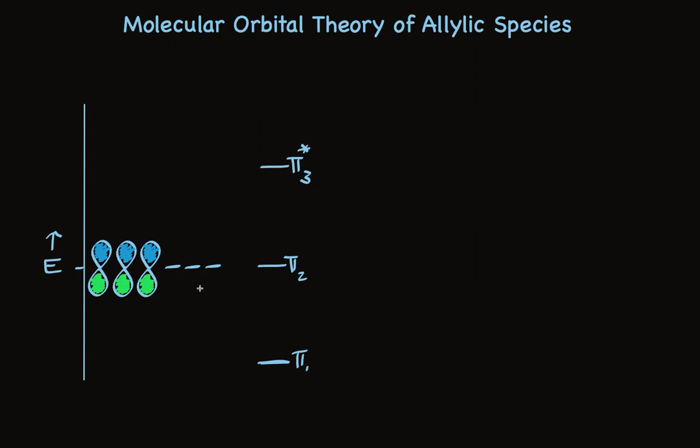One of these is lower energy and the other is higher energy. The other one, pi-2, is a non-bonding orbital that has the same energy as the p-orbitals. The more stable MO, pi-1, is a bonding orbital; pi-2 is a non-bonding orbital; and pi-3 is an anti-bonding orbital.